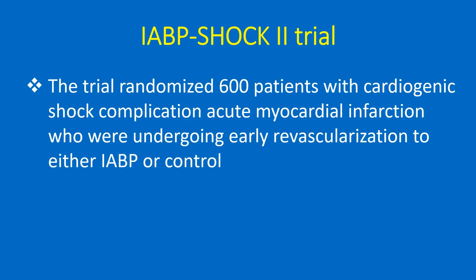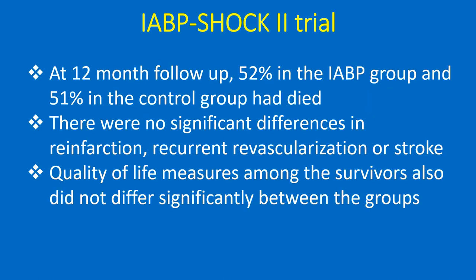The trial randomized 600 patients with cardiogenic shock complicating acute myocardial infarction who were undergoing early revascularization to either IABP or control. At 12-month follow-up, 52% in the IABP group and 51% in the control group had died.